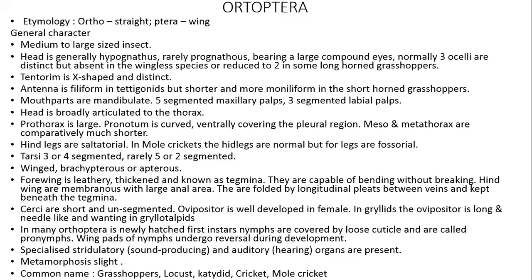Tentorium is present and distinct. The tentorium is the endoskeleton of the head. Tentorium is filiform in Tettigonids, but shorter and more moniliform in short-horned grasshoppers.